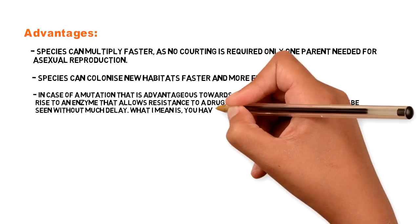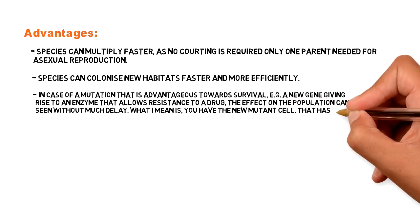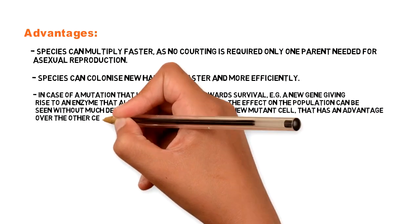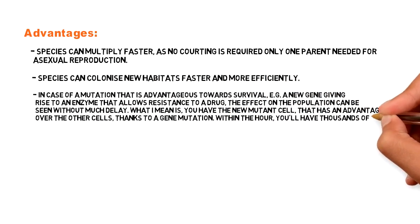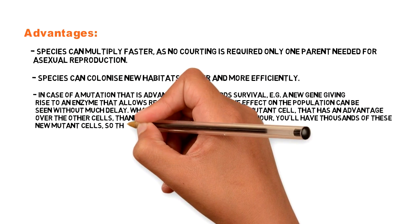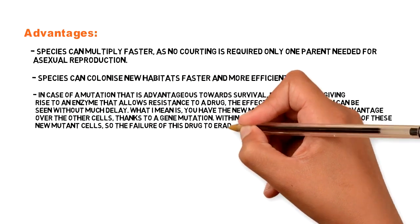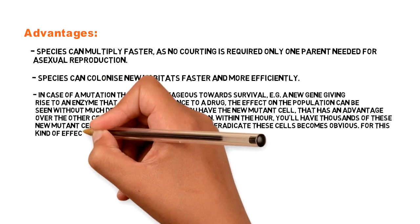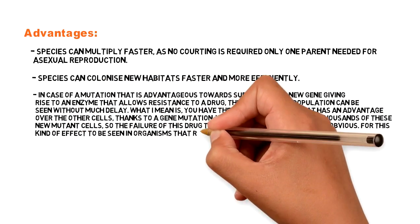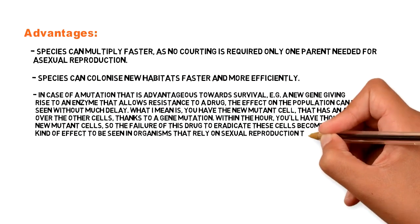What I mean is, you have the new mutant cell that has an advantage over the other cells, thanks to a gene mutation. Within the hour you will have thousands of these new mutant cells, so the failure of this drug to eradicate these cells becomes obvious. For this kind of effect to be seen in organisms that rely on sexual reproduction takes years or even decades.